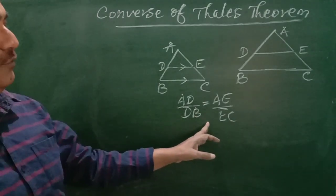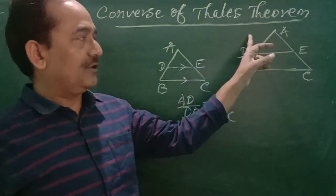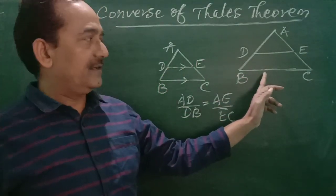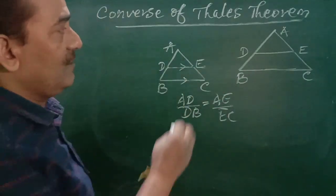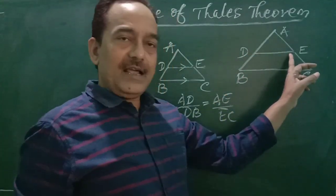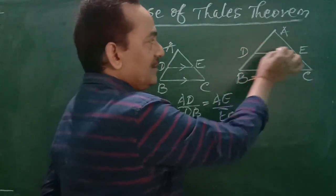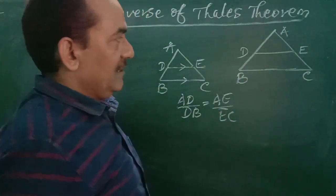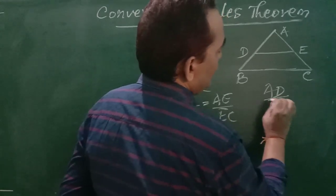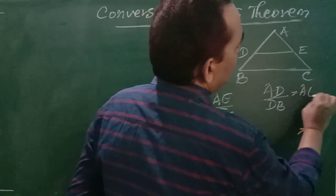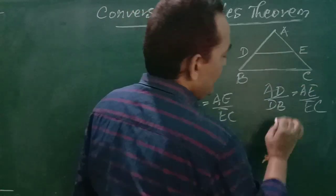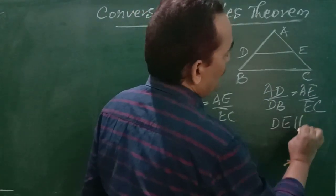But today we are going to study the converse of this theorem. What we have given here is that in any triangle, a straight line is drawn such that it divides any two sides of the triangle in equal ratio. Here it is given that AD by DB is equal to AE by EC.